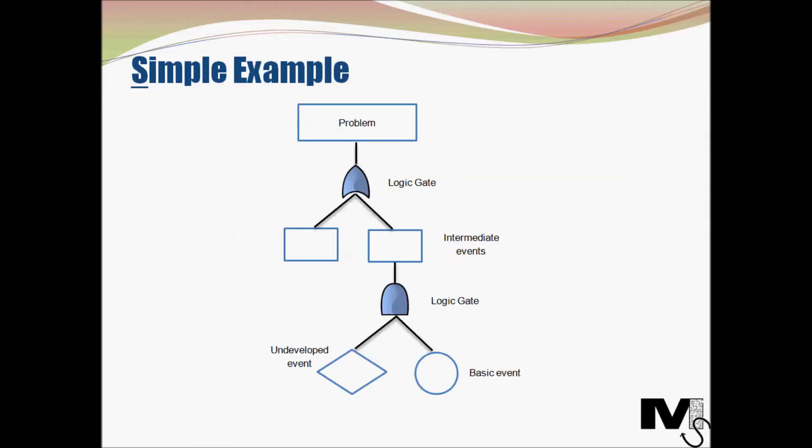Here is a simple FTA where the box at the top is called the top level event or the problem at hand. That is where we place the problem at hand because this is a top-down event. So we start from the top and that is the event that needs diagnosing. Then there is a logic gate which we'll look into now, followed by a couple of intermediate events.